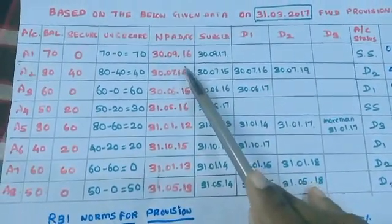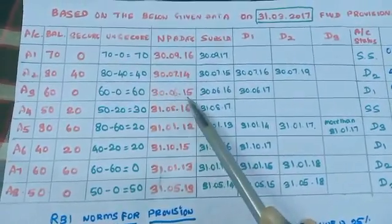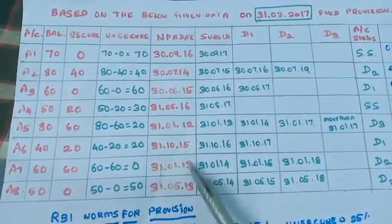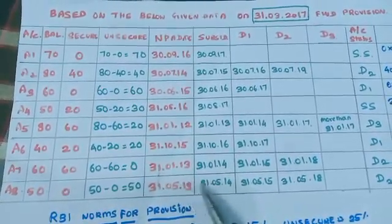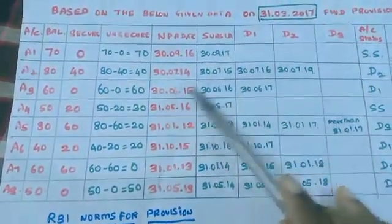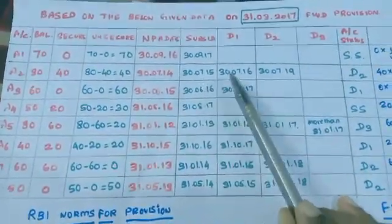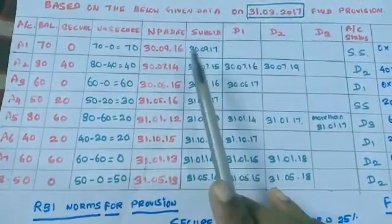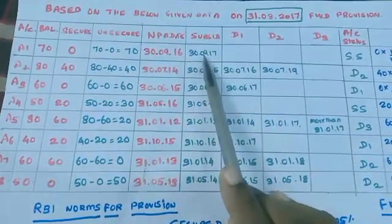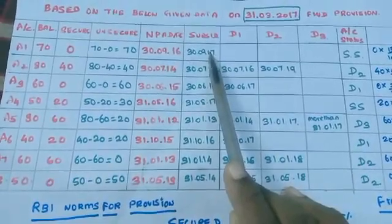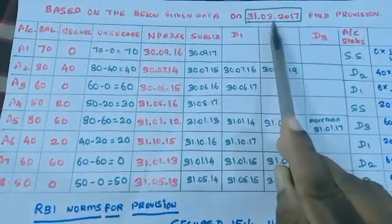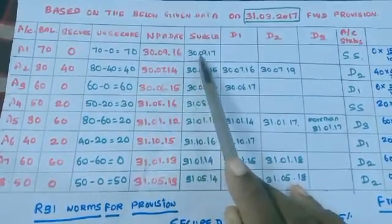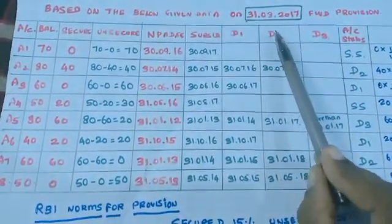NPA dates are given. The NPA date for A1 is 3-9-16. As our reference date is 31-3-17, which falls within one year of the NPA date, up to 3-9-17 it remains as a substandard category. Since our date 31-3-17 falls within this range, A1 is classified as substandard category as on 31-3-17.